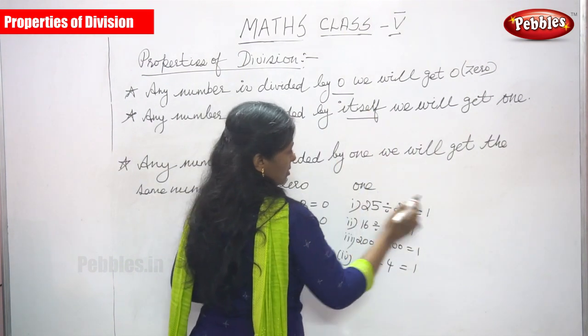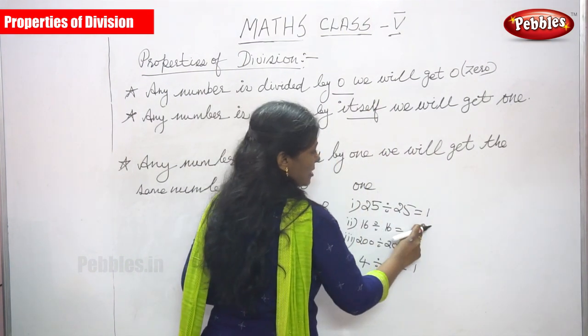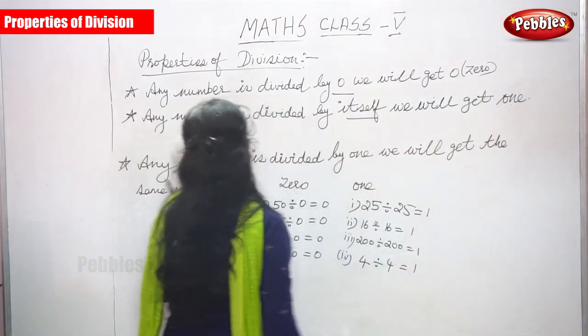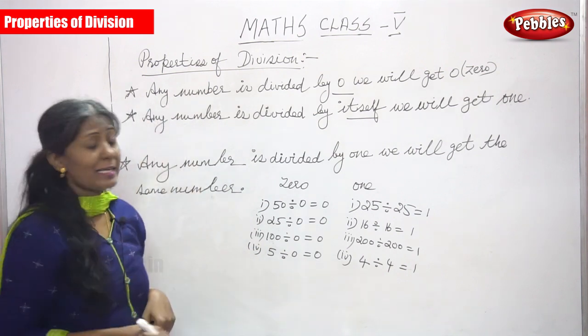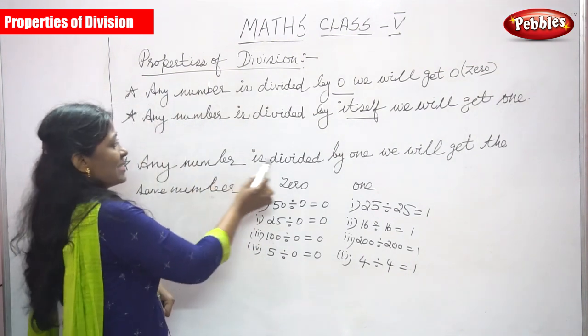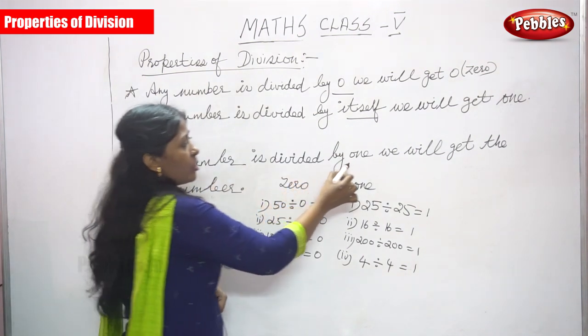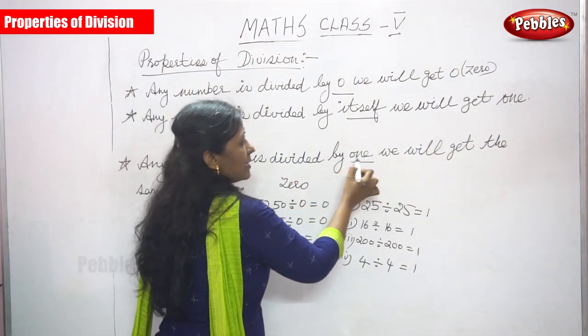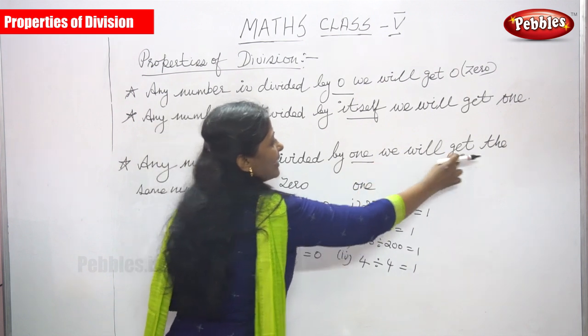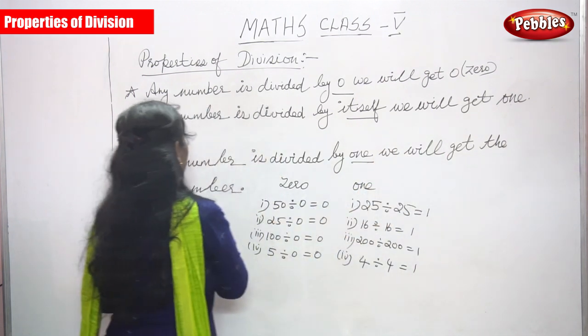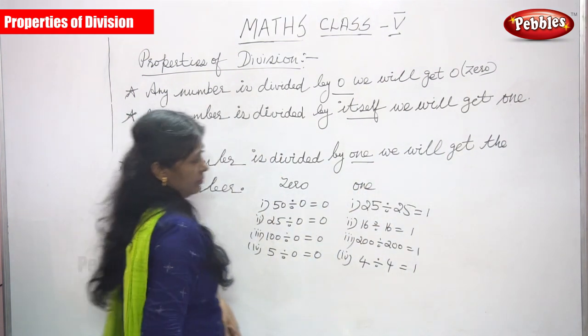This is the second property: any number divided by itself, you can get one. The last property: any number divided by one, we will get the same number.